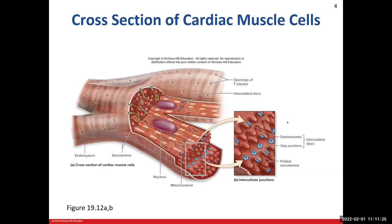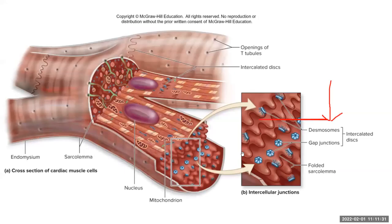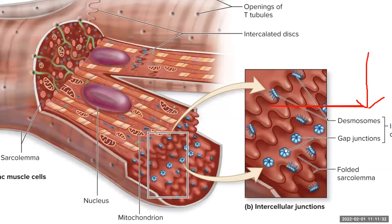Here you can see our intercalated disks with the desmosomes and the gap junctions. At the center of these gap junctions, you have holes that allow ions to travel from one cell to the next. The desmosomes hold the cells together, adding structural stability.